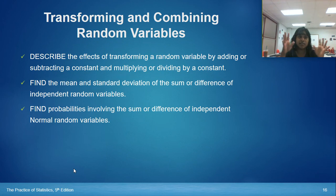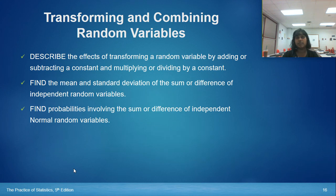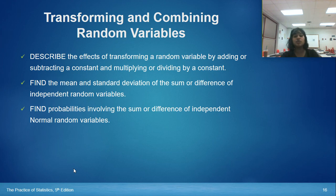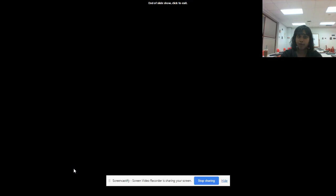To wrap up section 6.2: we talked about transformations, we learned how to calculate mean and standard deviation for sums and differences of independent random variables, and finally, how independent random variables relate back to the normal distribution curve.